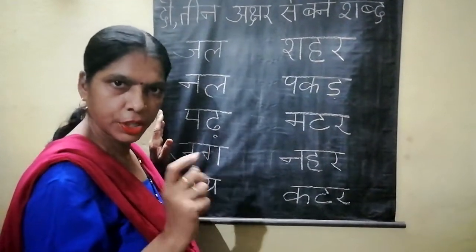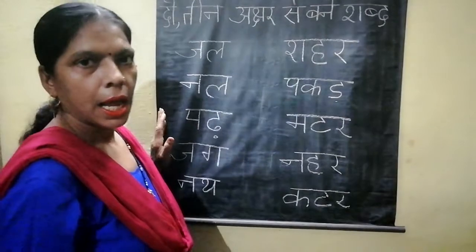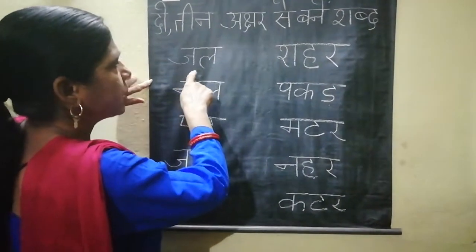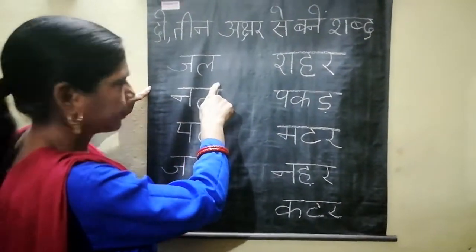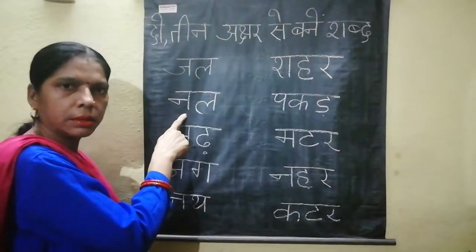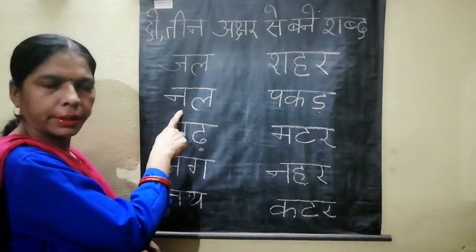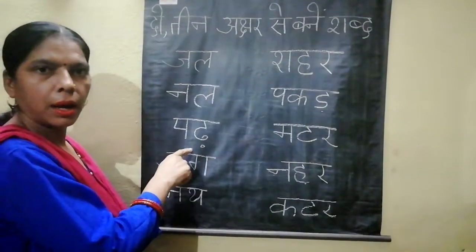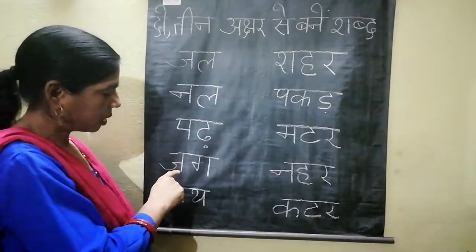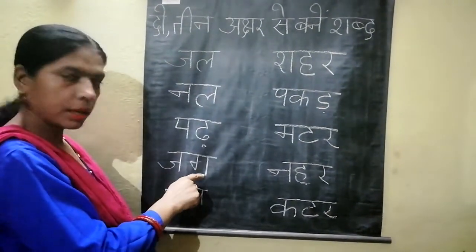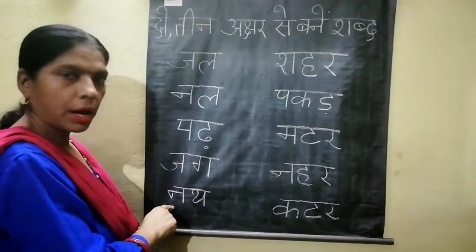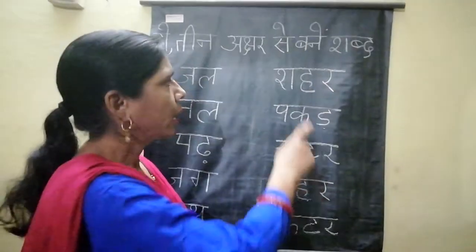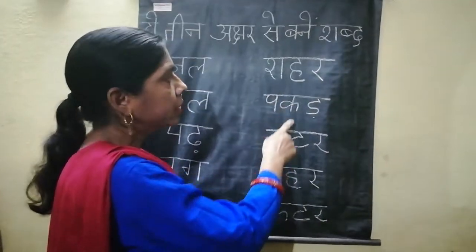Yeh do akshara wale shabd hain. Listen carefully and look: ja, la — jal. What is this? La, na — nal. What is this? Pa, ha — pad. Ja, ga — jag. Na, tha — nal. Okay, yeh kya hai — aapke teen akshara wale shabd.